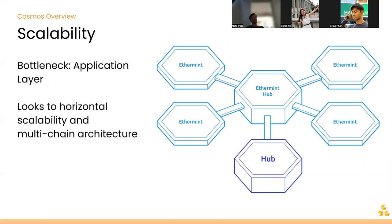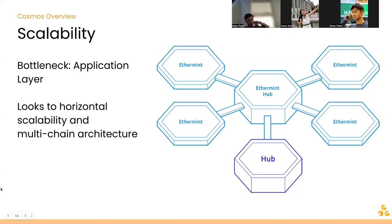With scalability, a lot of the bottleneck comes from the application layer. Cosmos sees multi-chain architecture as part of its future, because every chain has scalability limits with an upper bound. It'll look towards creating new chains. When talking to teams at Cosmoverse, they all said that if one chain gets too busy, they'll just build another — a kind of horizontal scalability solution.